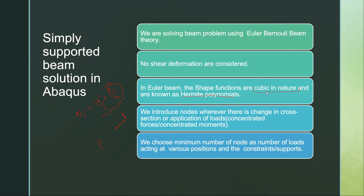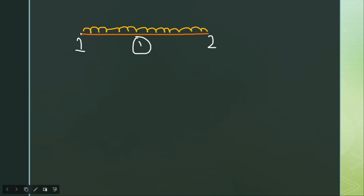We introduce nodes wherever there is a change in cross section or application of loads, change in support conditions. For this beam, the first node is at one end and the second node is at the other end — two nodes, one element minimum.